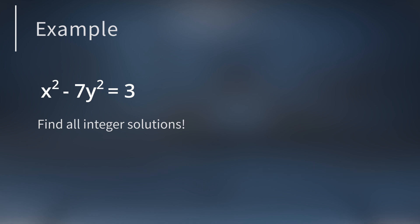One way to solve this is to rewrite the equation as x squared equals 7y squared plus 3. Since we're looking for integer solutions, we can assume the left and right hand sides are both integers. On the right hand side, we have a multiple of 7 plus 3. This means that x squared will have a remainder of 3 when you divide it by 7.